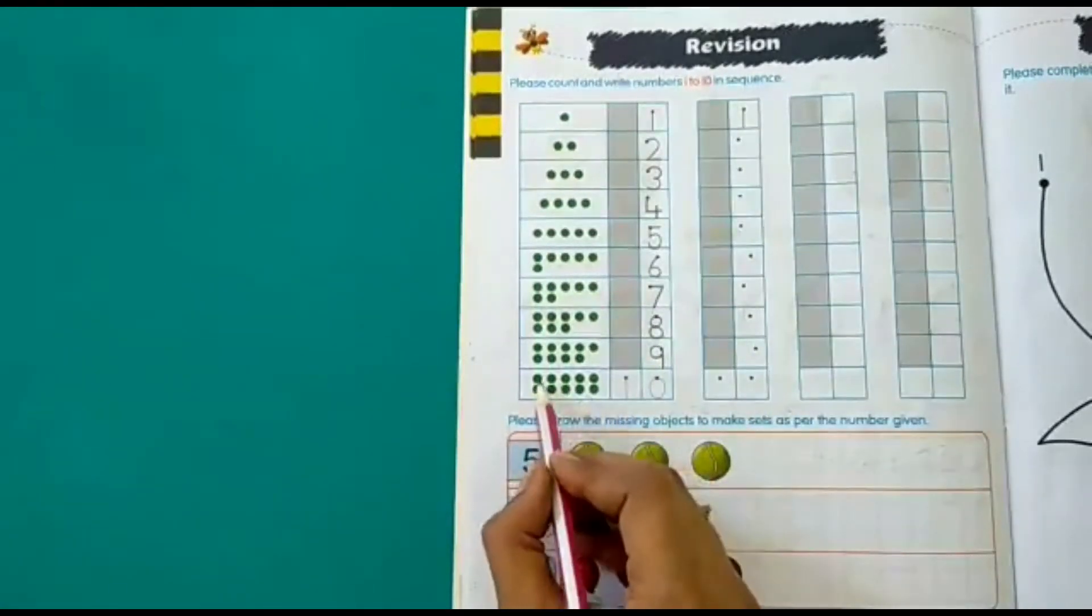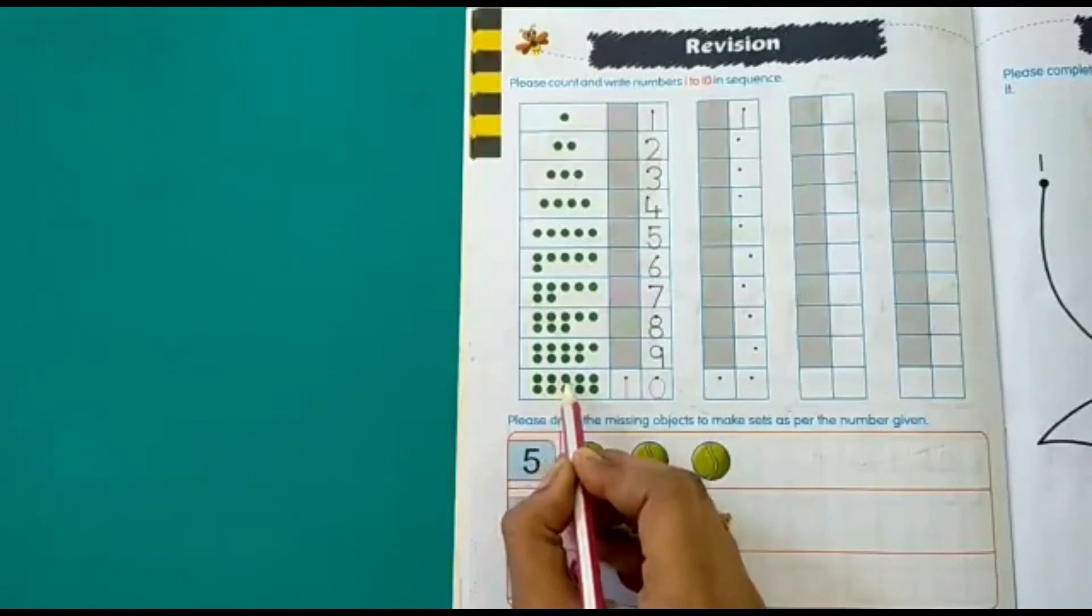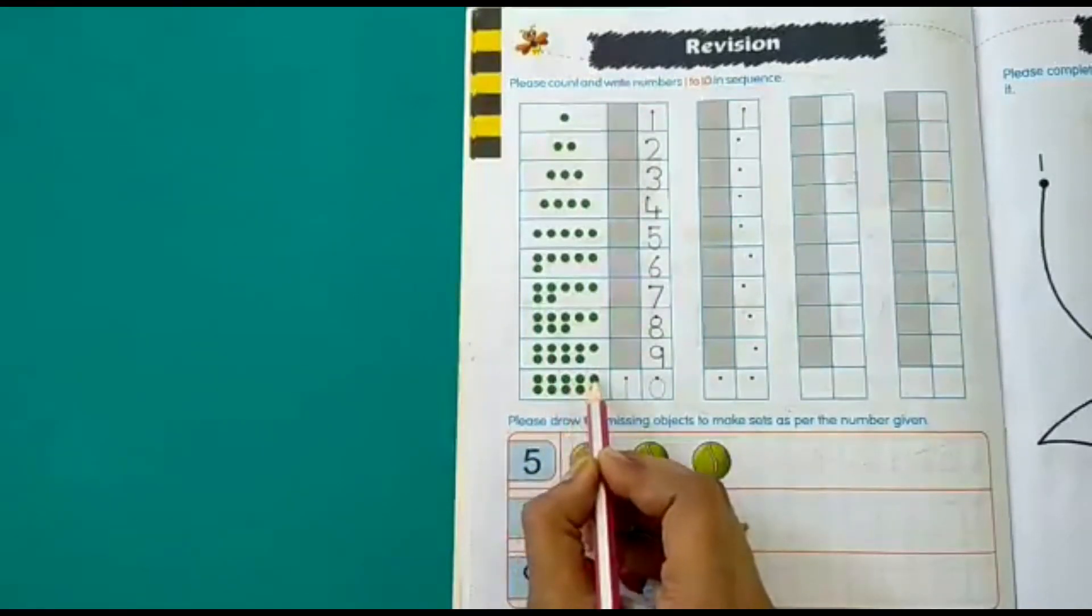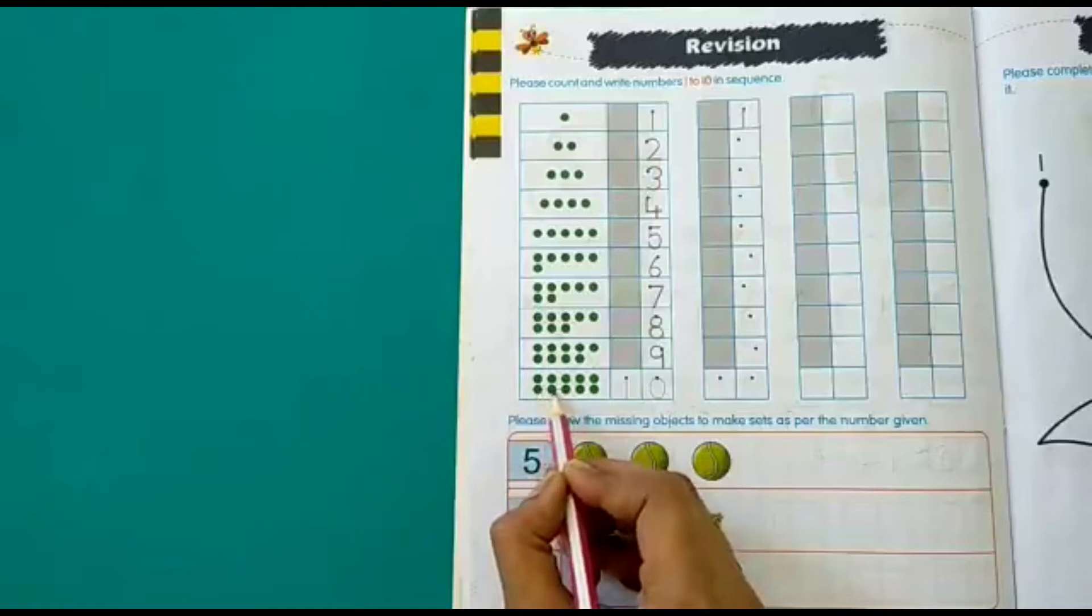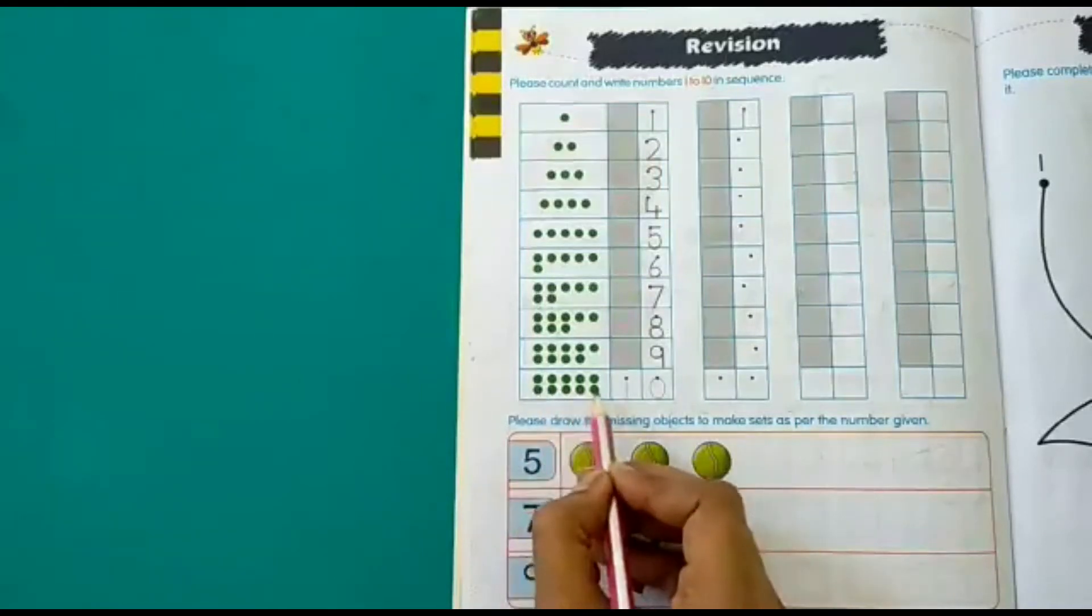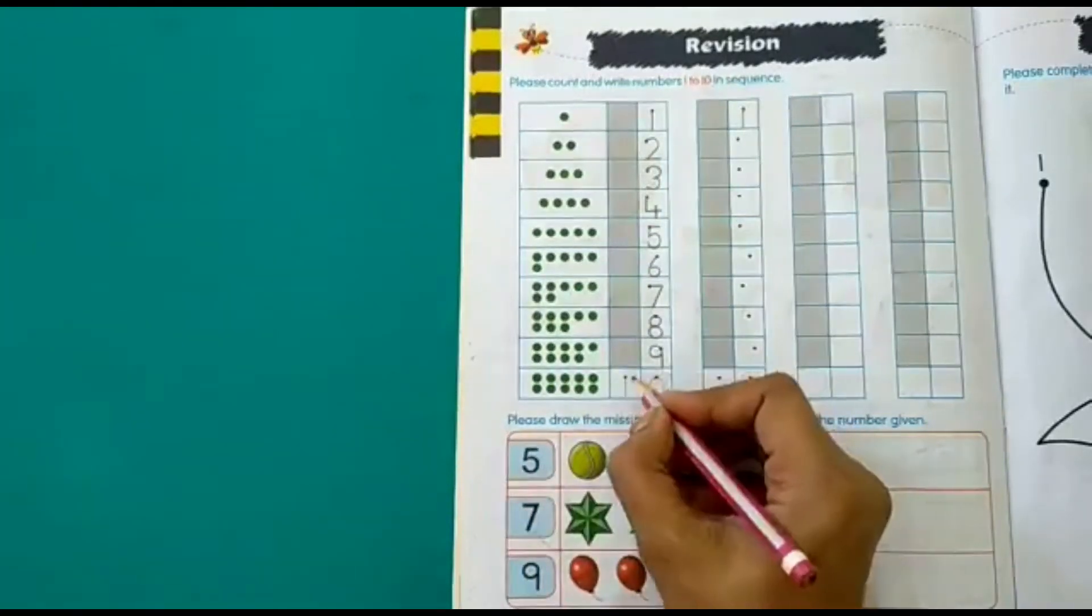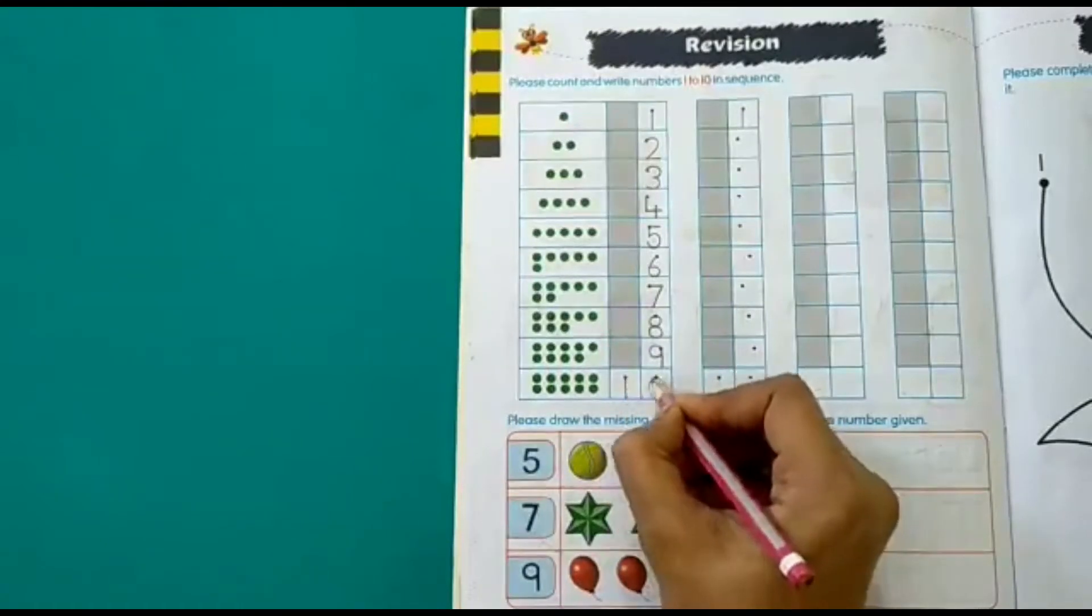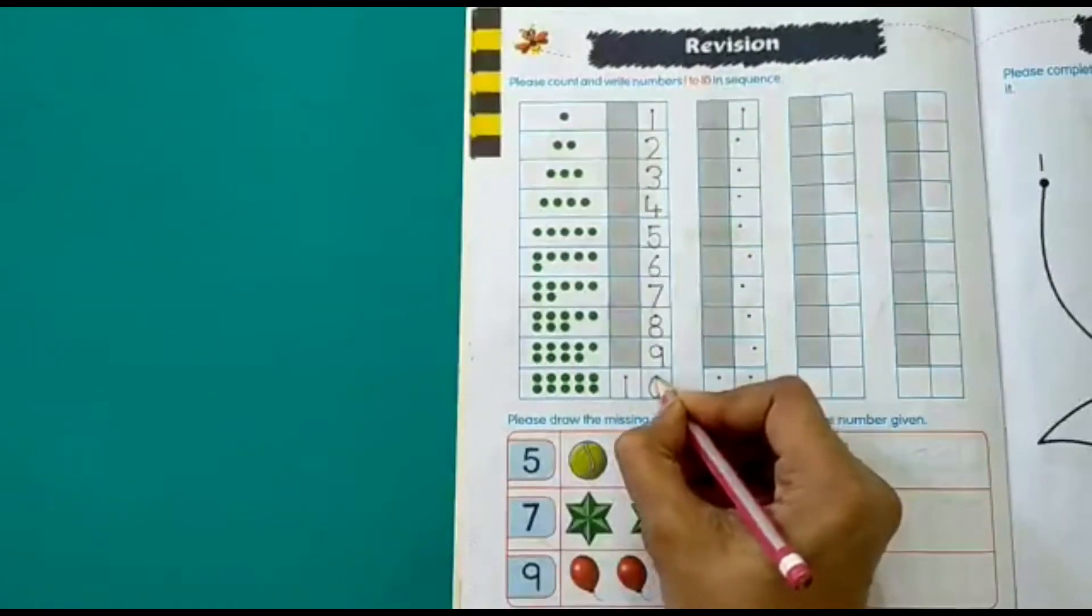And the last box. 1, 2, 3, 4, 5, 6, 7, 8, 9, 10. So we will write 10. That is 1 and 0. 10.